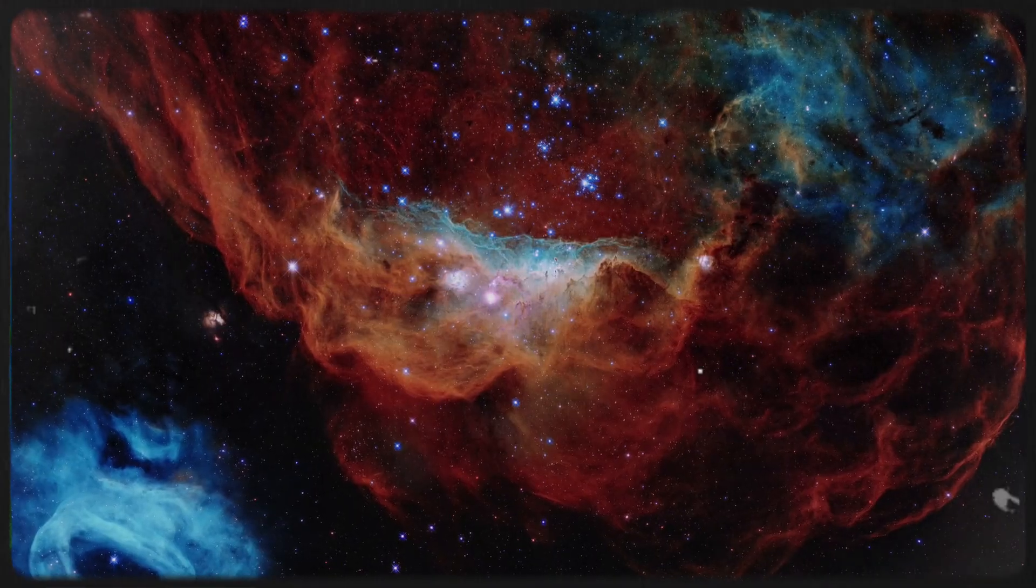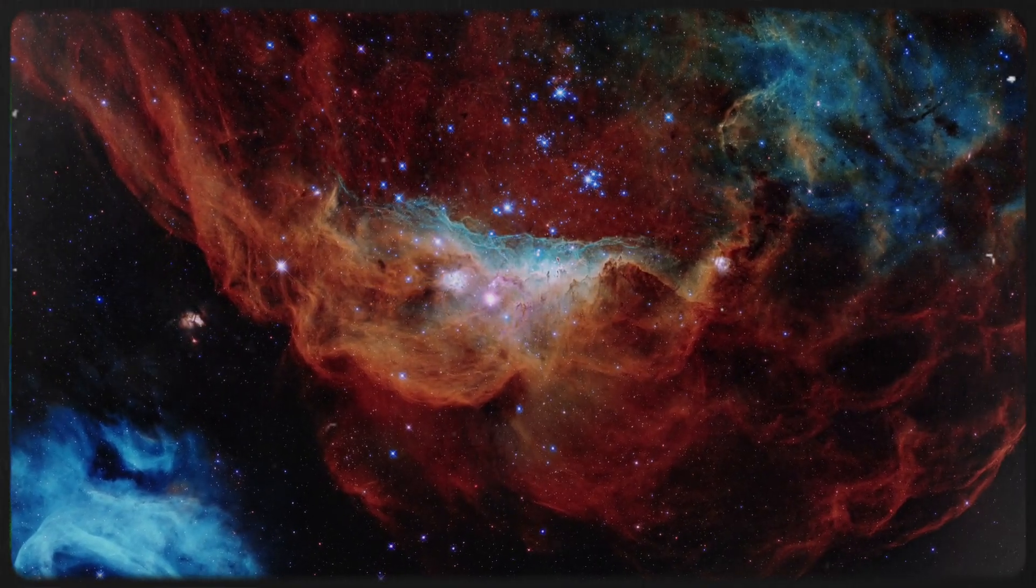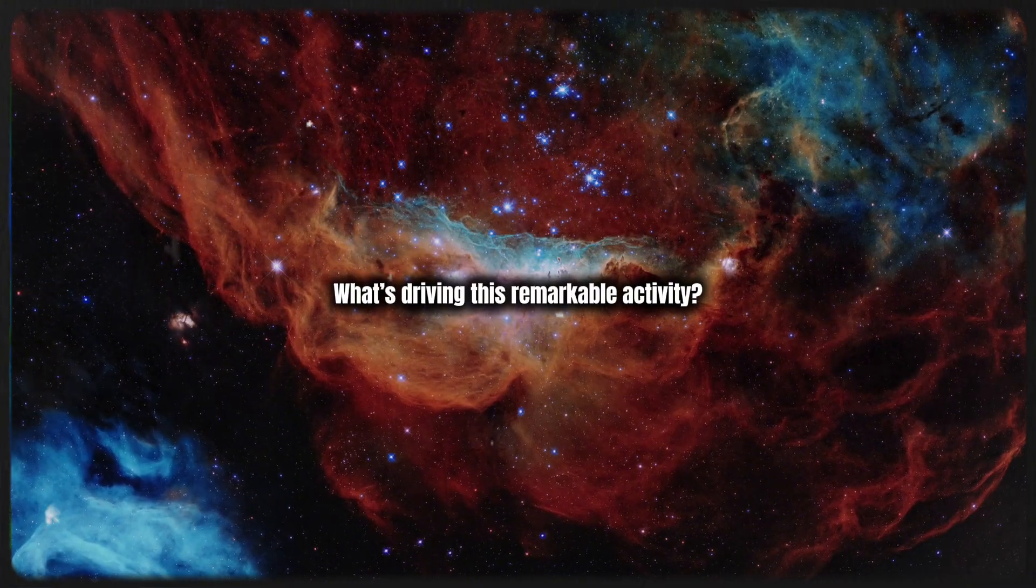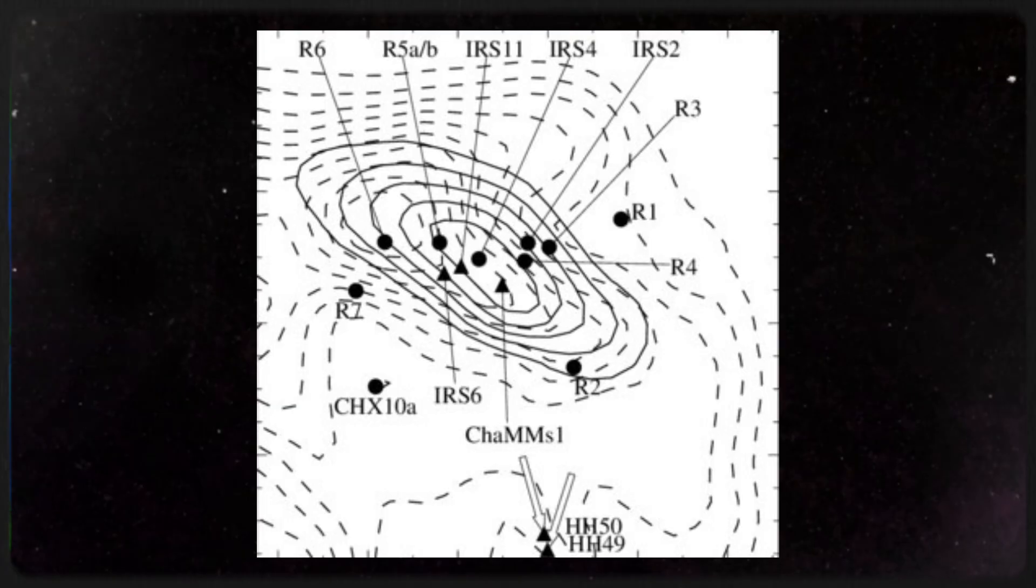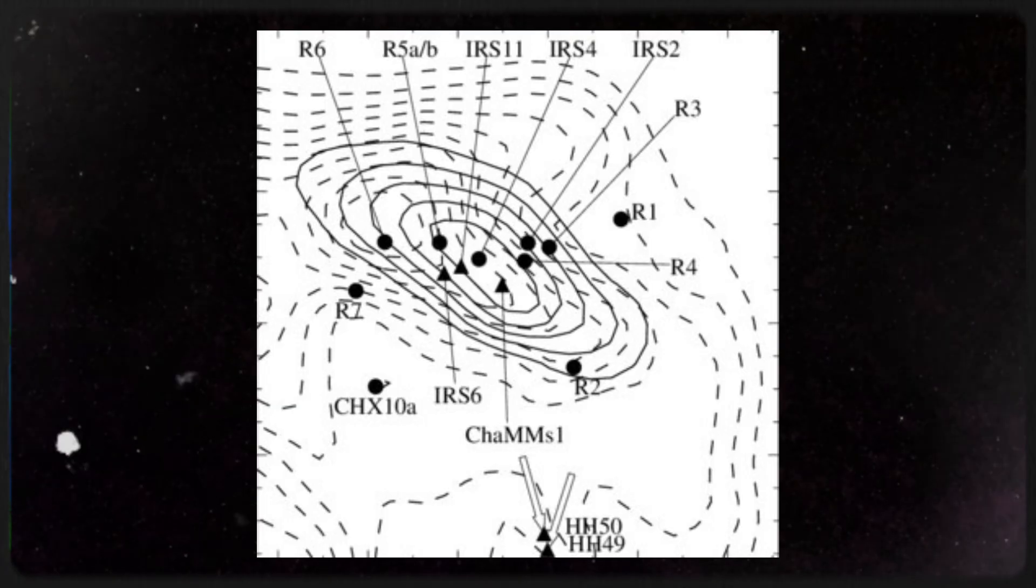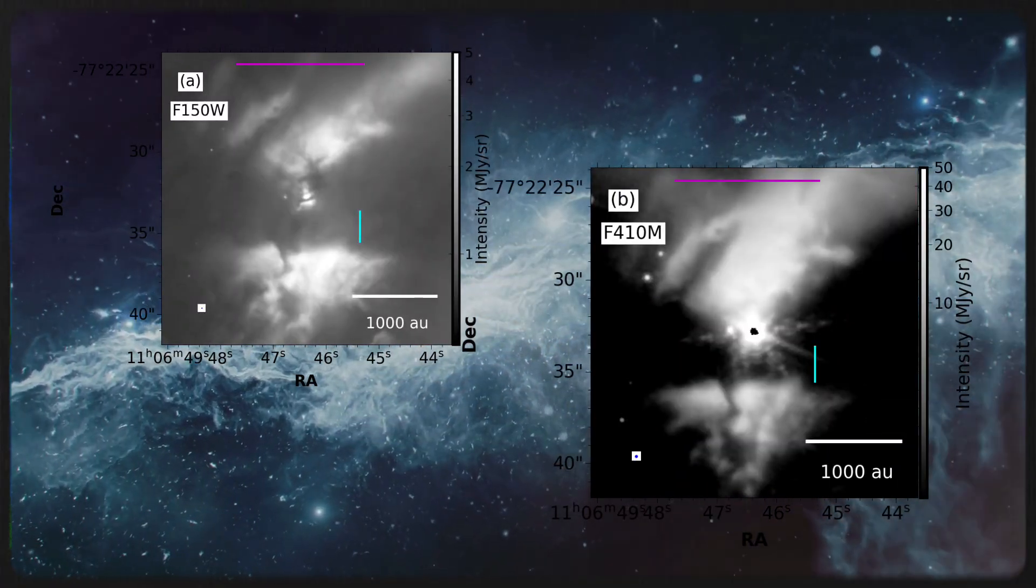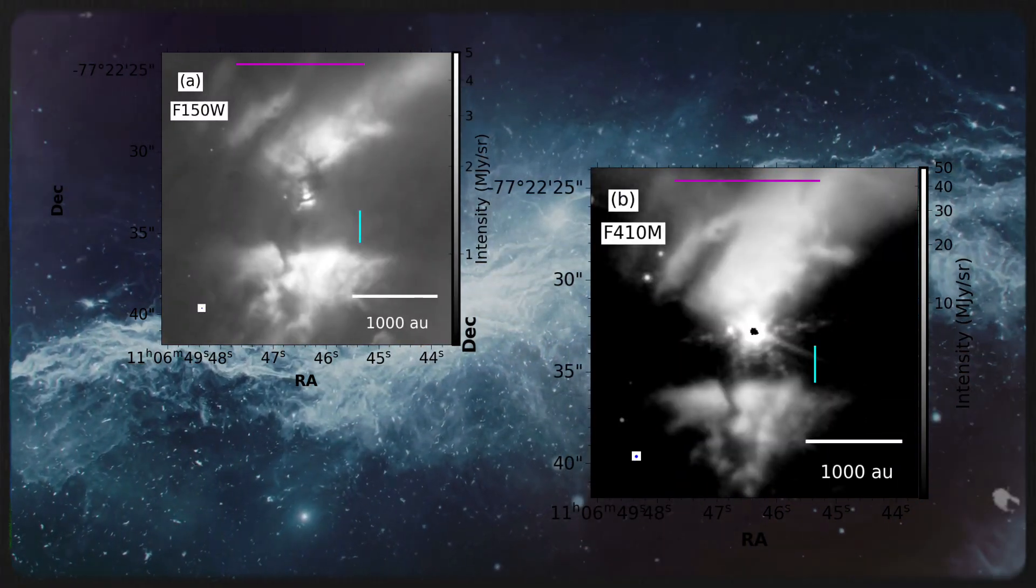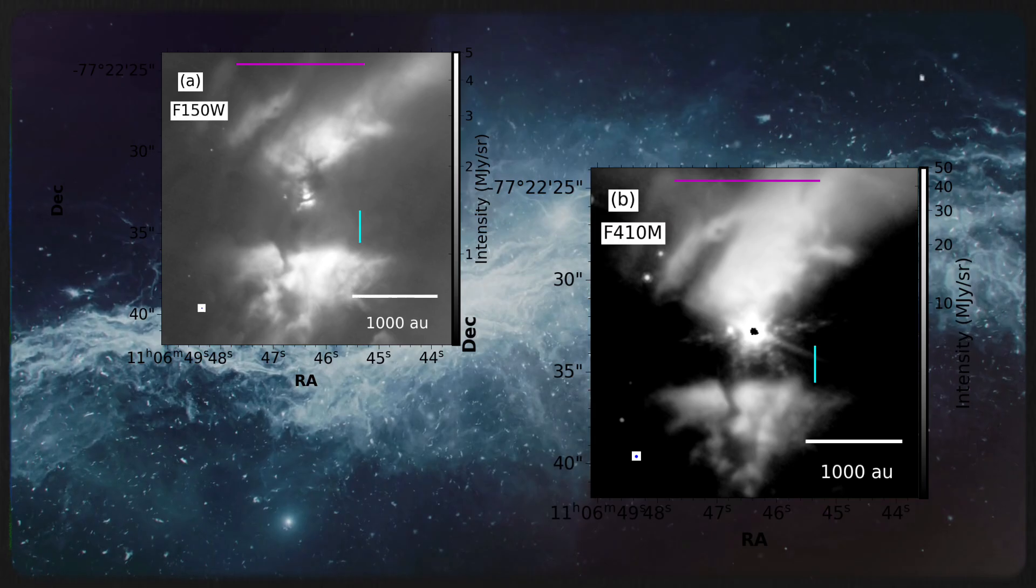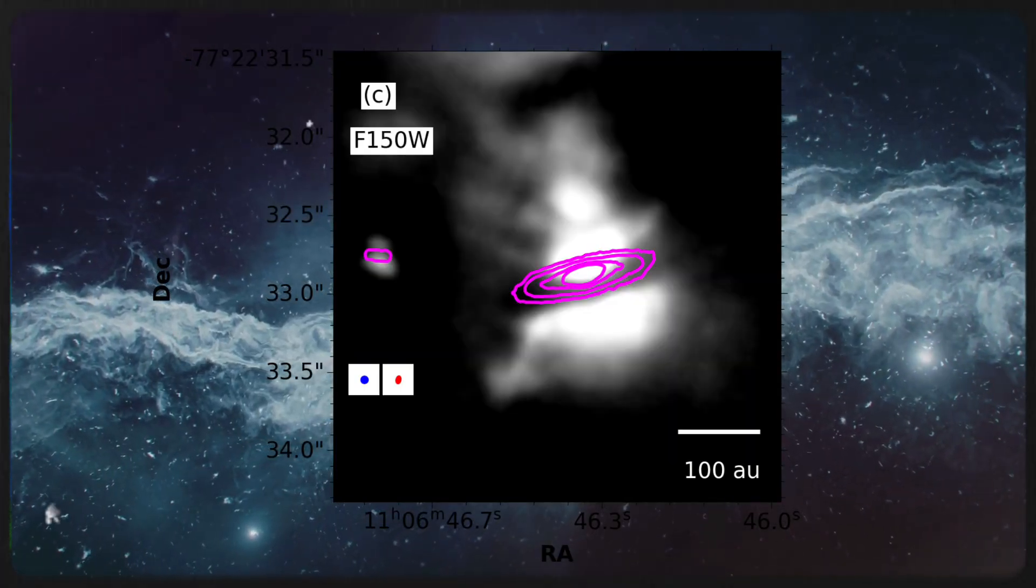Now let's zoom in a bit further and take a closer look at the origin of this powerful outflow. What's driving this remarkable activity? Scientists believe that the energy behind the HH49 by 50 jet is coming from a protostar known as Cedar Blad 110 IRS-4. This star, still in its early stages of development, lies about 1.5 light years from the outflow we see in the Webb image. It's located just off the bottom right corner of the frame.